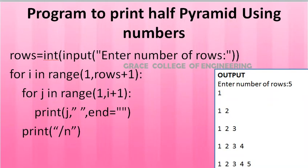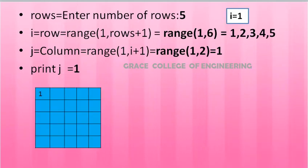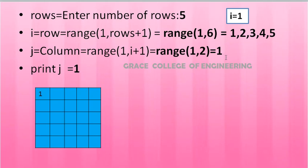For the program execution with 5 rows entered: i iterates over range(1, 6), giving values 1, 2, 3, 4, 5. For the first row, i=1, so j iterates range(1, 2), giving j=1 only. For the second row, i=2, so j iterates range(1, 3), giving j=1, 2. The end value is not included, so range(1, 3) gives 1 and 2.